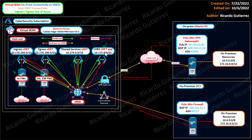For egress, when you have a virtual instance hitting the internet, it will send the traffic through the virtual hub. From the virtual hub it will send the traffic to the egress firewalls that live in the egress VNet.